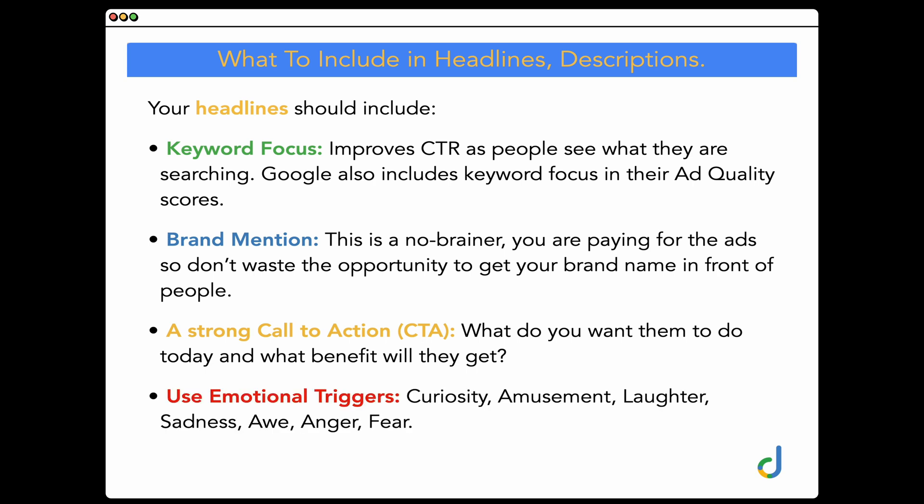The final and most commonly missed element is emotional triggers. Remember the home security example — if a user was searching for security cameras and saw an ad specifically mentioning stopping porch pirates or keeping your family safe, and that messaging lined up with their reason for searching, they're much more likely to click. With emotional triggers you're building curiosity, fear of missing out — FOMO — and you're either talking to their pain or talking to their need, heightening that emotion.